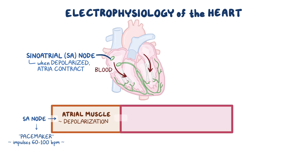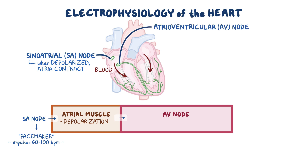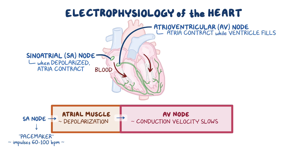Meanwhile, the impulse lands at the atrioventricular, or AV, node, which lies at the lower back section of the septum that separates the right and left atria. Conduction velocity, or the speed at which the impulse is propagated, slows way down in the AV node. This allows time for the atria to contract while the ventricle fills.